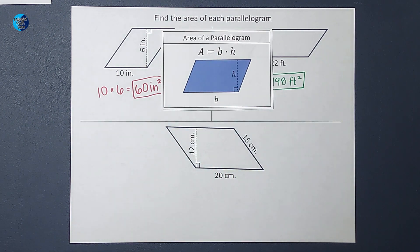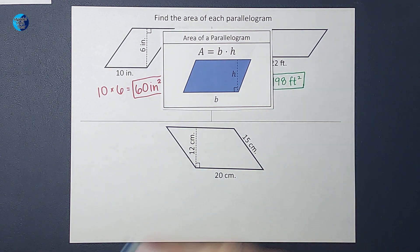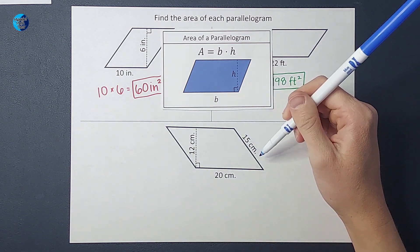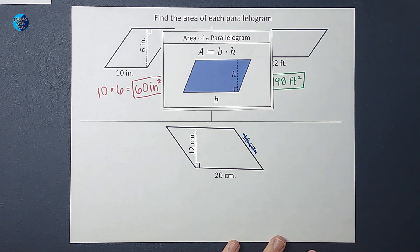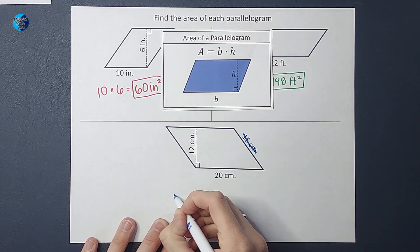Alright, let's go ahead and do the last one. Now this one throws an extra number at you here. Your teacher or whoever wrote your textbook, they may at times throw an extra number in there to make sure you know which ones you need to use. So that's 15 centimeters, thanks for telling me that, but I do not need to know that to figure out the area.